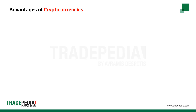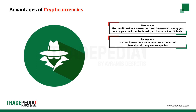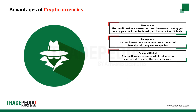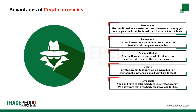Advantages of cryptocurrencies. All cryptocurrency transactions are permanent — after confirmation, a transaction can't be reversed by anyone. They are anonymous: neither transactions nor accounts are connected to real-world people or companies. They are fast and global: transactions are executed within minutes, no matter which country the two parties are in, whereas a bank wire can take hours or even days internationally. They are secure: cryptocurrency funds are locked in a public key cryptography system, making them very hard to steal.